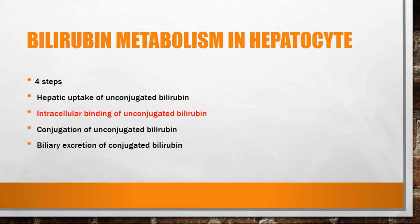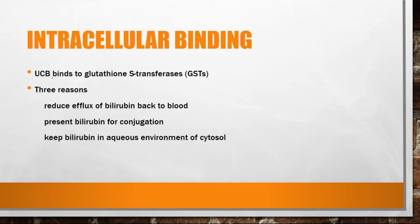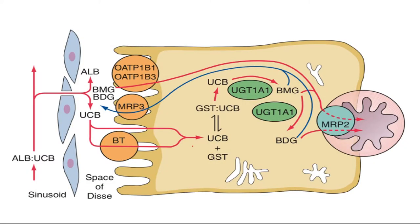In the second step, we have intracellular binding of unconjugated bilirubin. Unconjugated bilirubin will bind to glutathione S-transferases for three reasons: first, to reduce the efflux of bilirubin back to blood; second, to present bilirubin for conjugation; and third, to keep bilirubin in the aqueous environment of the cytosol. This prevents the backflow of unconjugated bilirubin into the space of Disse.